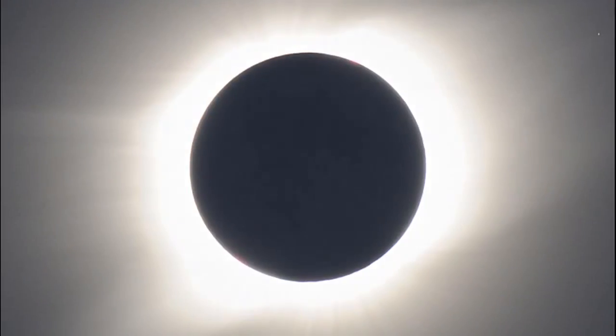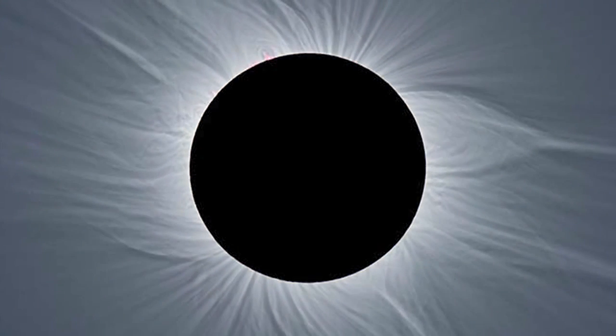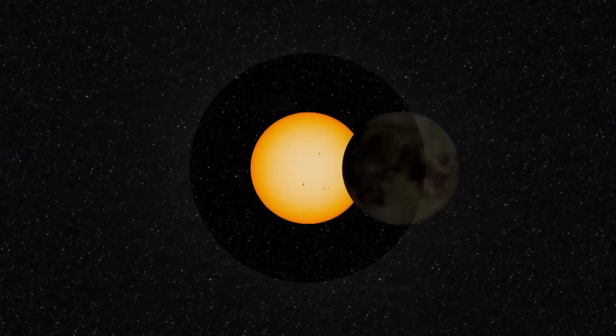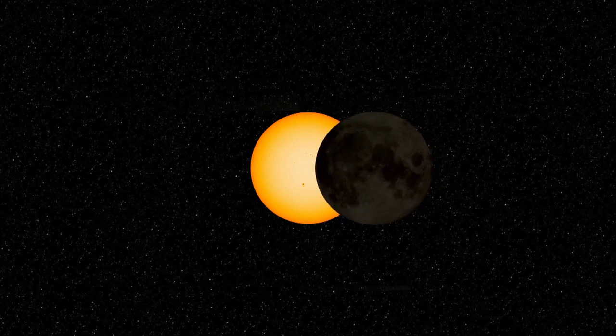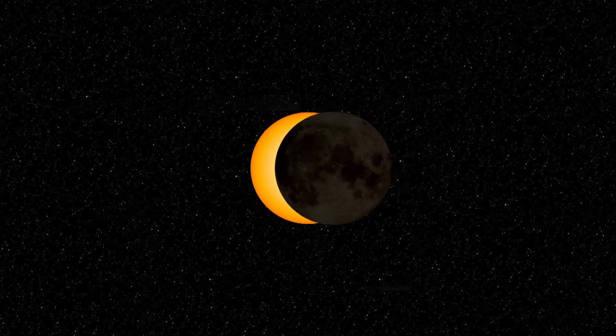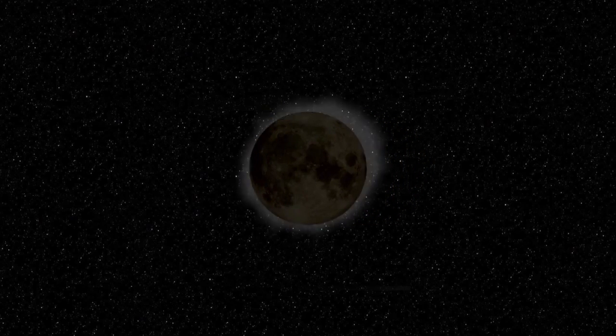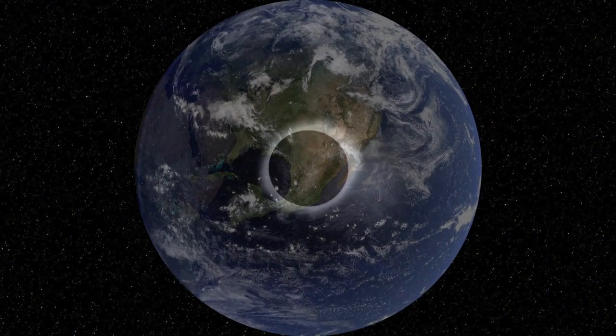Total eclipses of the Sun have puzzled and amazed observers since ancient times. An eclipse occurs when one celestial body appears to partially or totally block the light from another celestial object, as seen from a specific location.